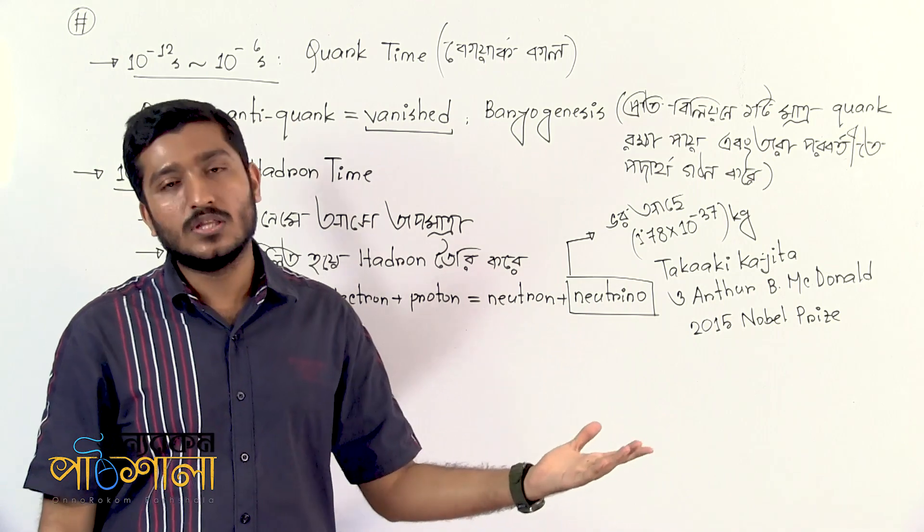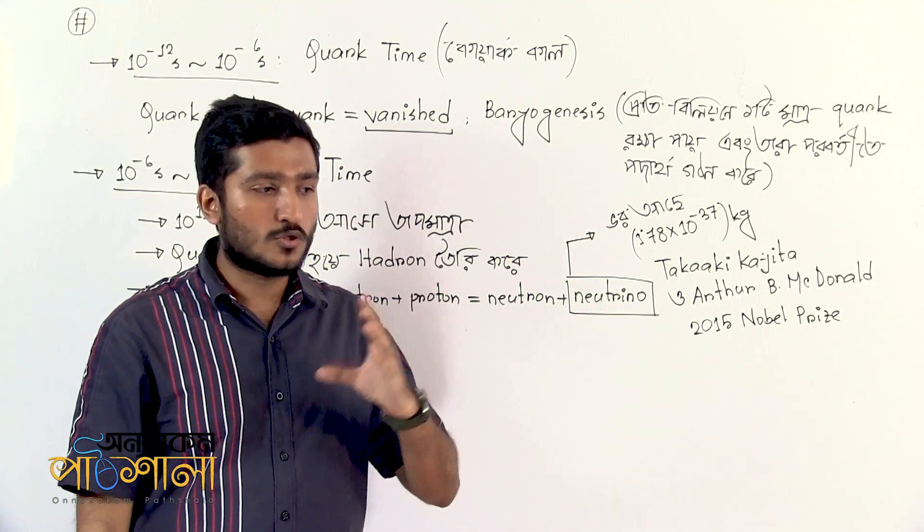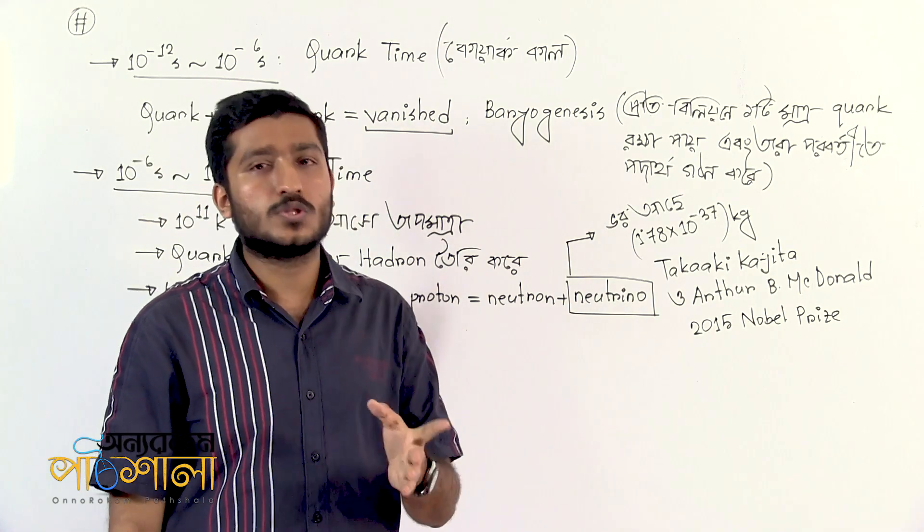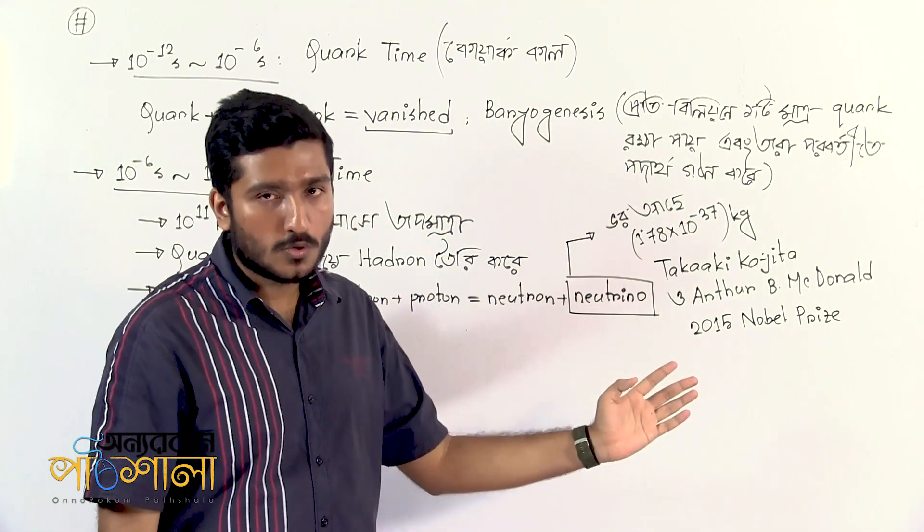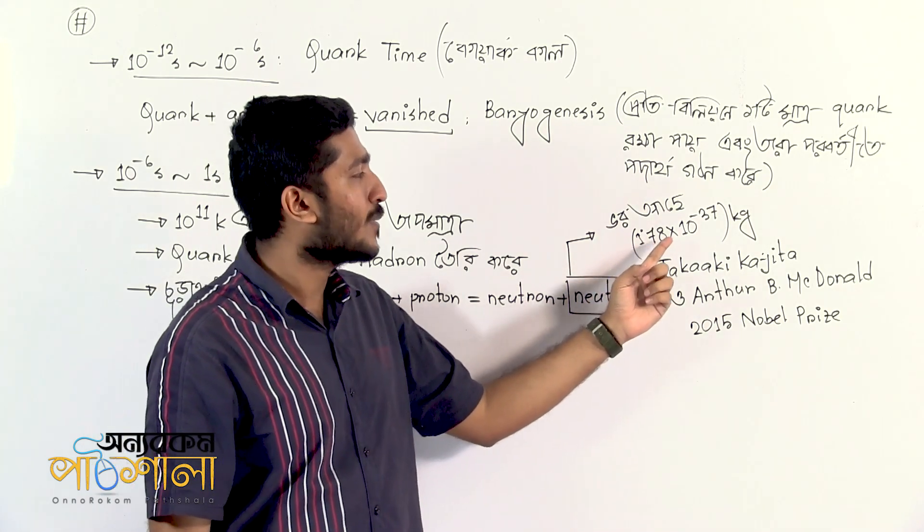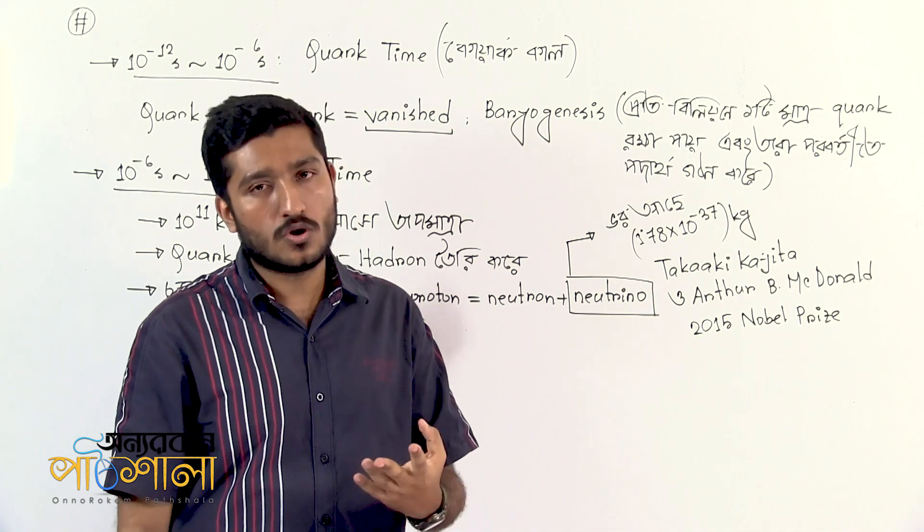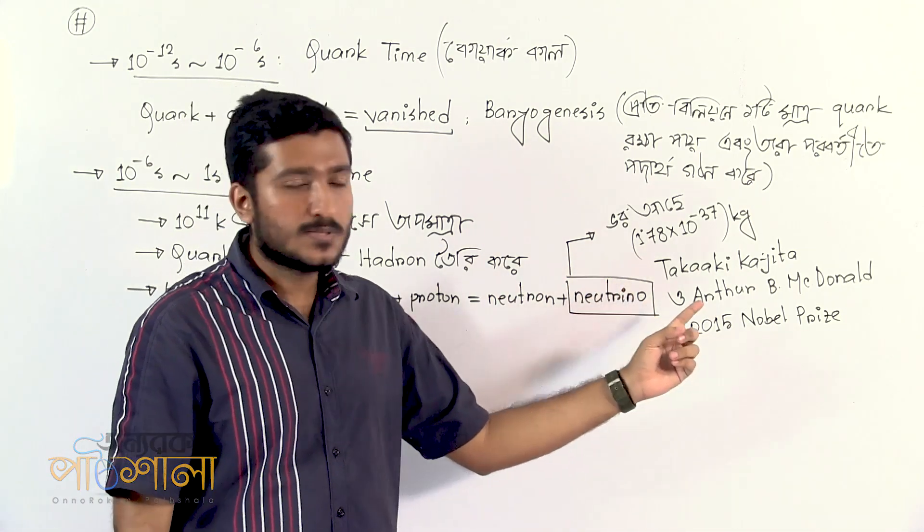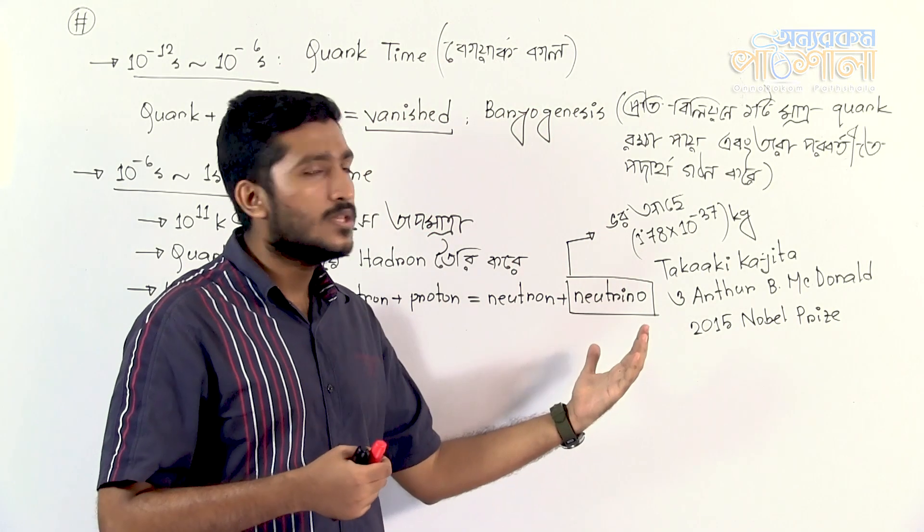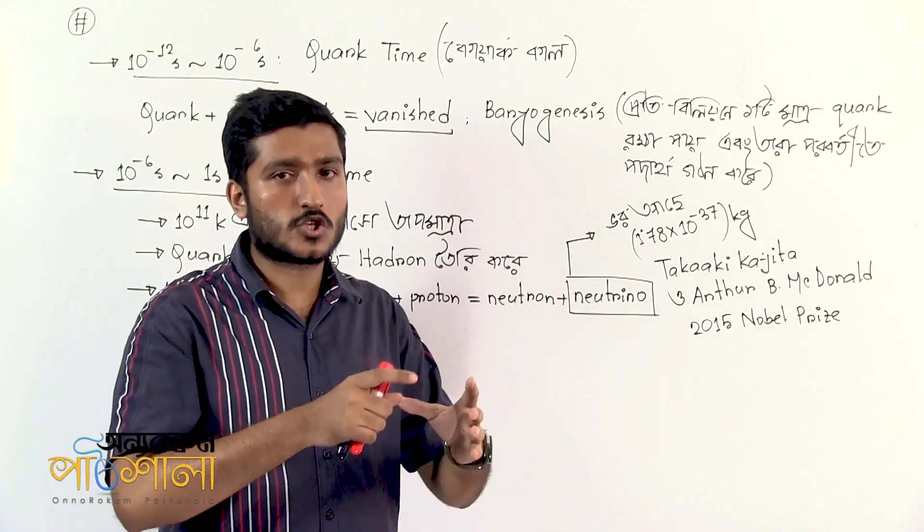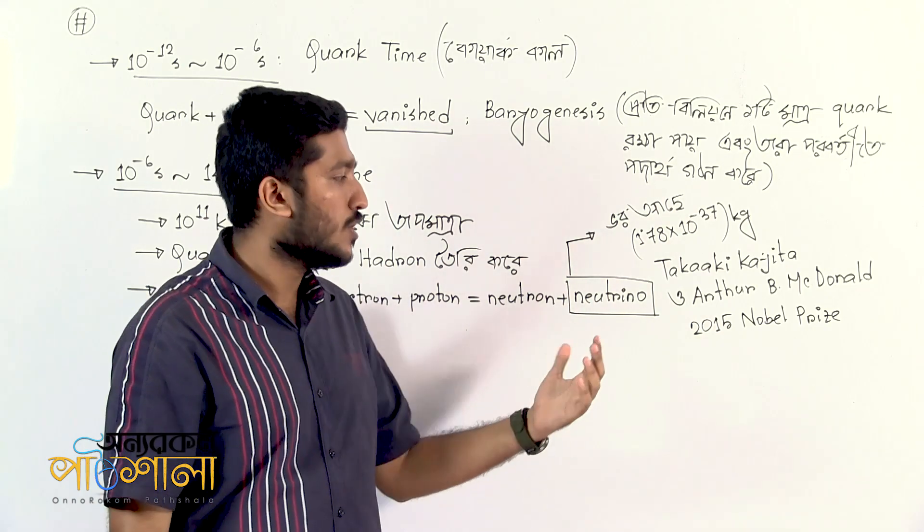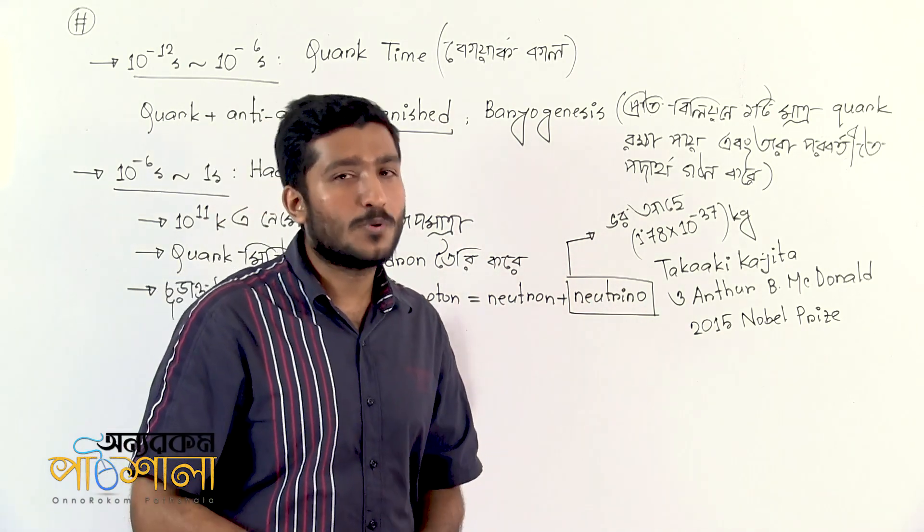Next, we consider neutrinos. Unlike initially thought, neutrinos are not massless - they do have a small mass. This mass comes from interaction with the Higgs field and the Higgs boson particle. This discovery was made independently by Takaaki Kajita and Arthur B. McDonald, who were awarded the Nobel Prize in Physics in 2015 for demonstrating neutrino oscillations, which proved neutrinos have mass.